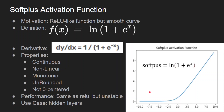Softplus is not zero-centred because it does not give any negative values in the output. Performance-wise it is about the same as ReLU, but it is not consistent across different tasks, so it is not very popular and not much used. Its use case is only for hidden layers, as it cannot be used for output layers.